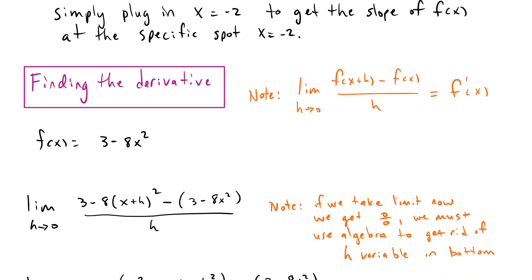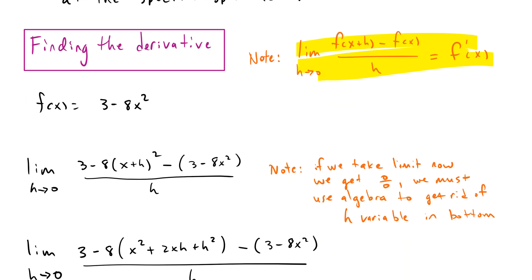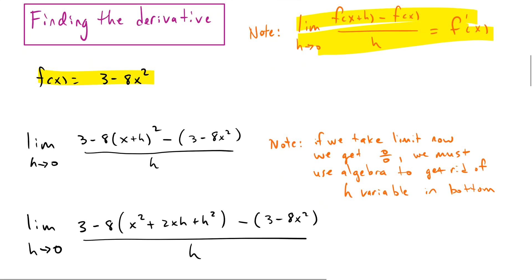So if we're going to find the derivative, we're going to be doing it using the limit definition of the derivative, which is right here, which is the limit of f of x plus h minus f of x all over h as h approaches 0. So if we start out with our function, 3 minus 8x squared, then we plug in all the information that we have.